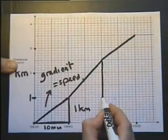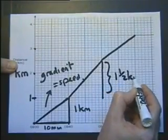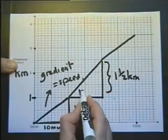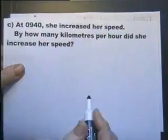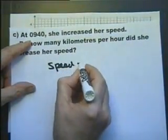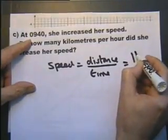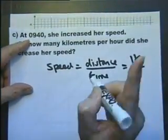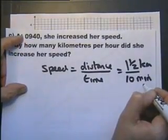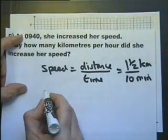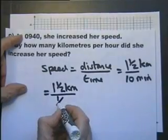We've got the distance, which is 1.5 kilometers, and the time, which is again 10 minutes. The gradient of this line is 1.5 over 10, or speed equals distance divided by time, which is the same as the gradient. That is 1.5 kilometers and that is 10 minutes. If we're considering kilometers per hour, we need the top to be kilometers, which it is, and the bottom to be hours, which it isn't yet.